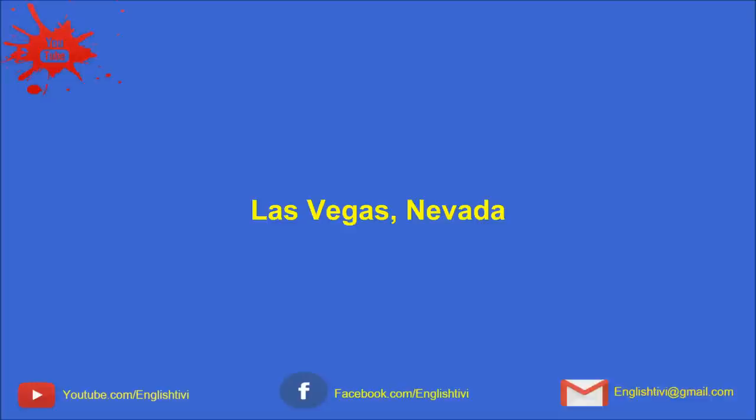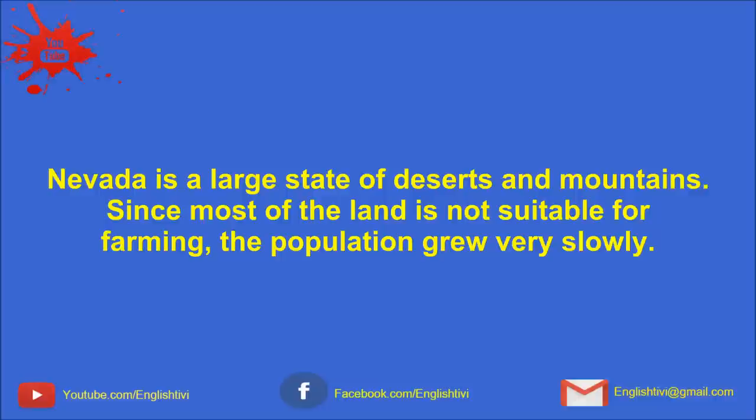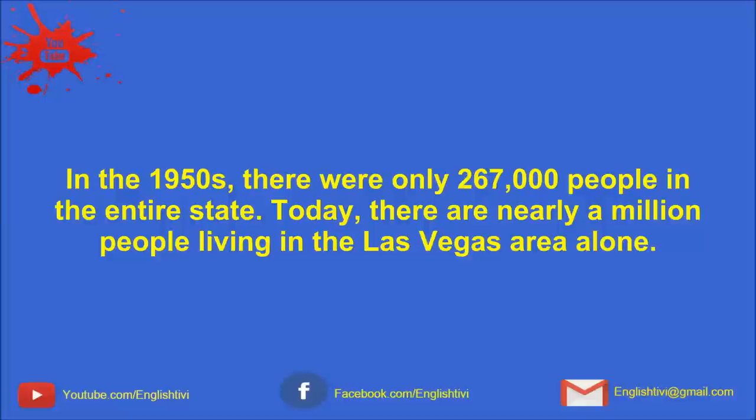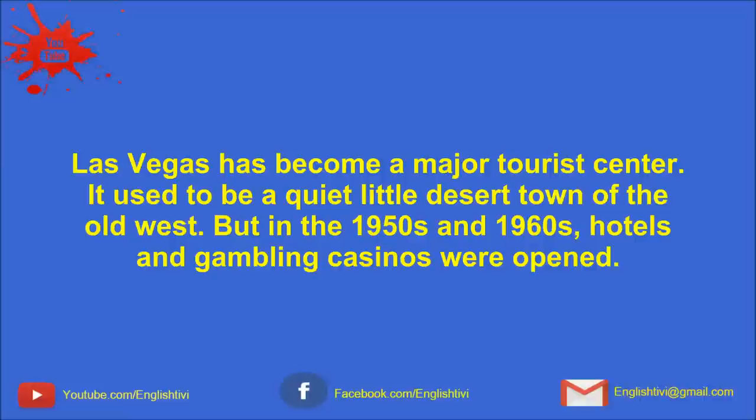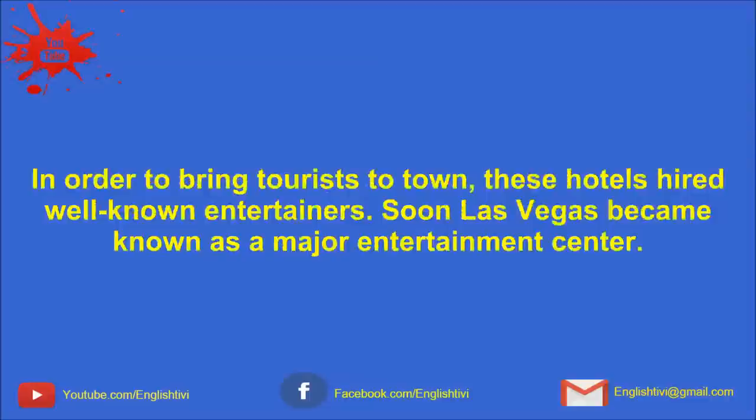Nevada is a large state of deserts and mountains. Since most of the land is not suitable for farming, the population grew very slowly. In the 1950s, there were only 267,000 people in the entire state. Now, there are nearly a million people living in the Las Vegas area alone. Las Vegas has become a major tourist center. It used to be quite a little desert town of the Old West, but in the 1950s and 1960s, hotels and gambling casinos were opened. In order to bring tourists to town, these hotels hired well-known entertainers. Soon, Las Vegas became known as a major entertainment center.